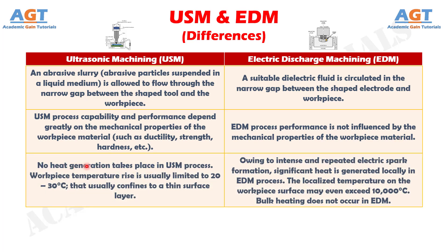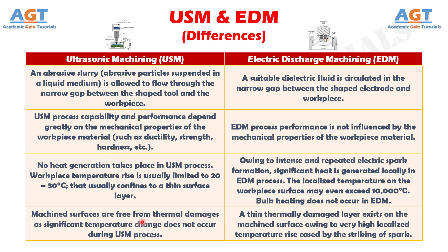Difference number 9: No heat generation takes place in ultrasonic machining process; workpiece temperature rise is usually limited to 20 to 30 degrees Celsius, confined to a thin surface layer. Whereas, owing to intense and repeated electric spark formation, significant heat is generated locally in electric discharge machining. The localized temperature on the workpiece surface may even exceed 10,000 degrees Celsius, though bulk heating does not occur. Difference number 10: Machined surfaces are free from thermal damages in ultrasonic machining, whereas in electric discharge machining a thin thermally damaged layer exists on the machined surface owing to the very high localized temperature rise caused by the striking of spark.